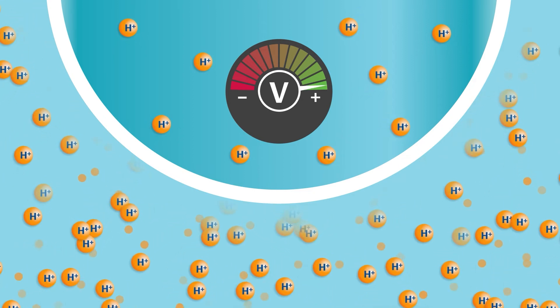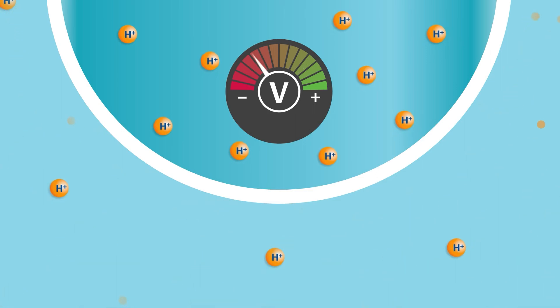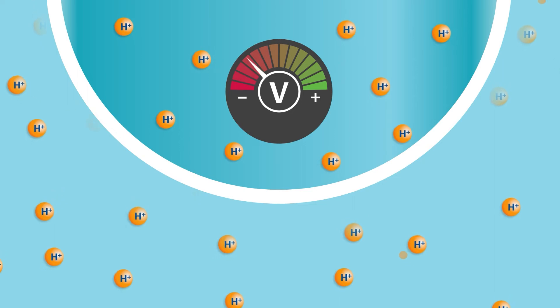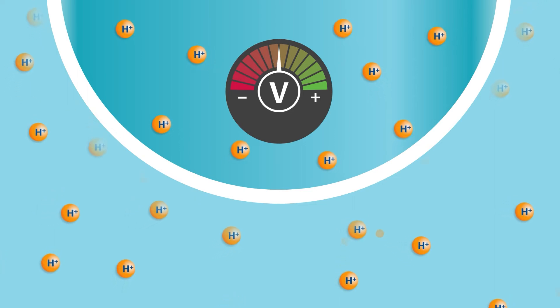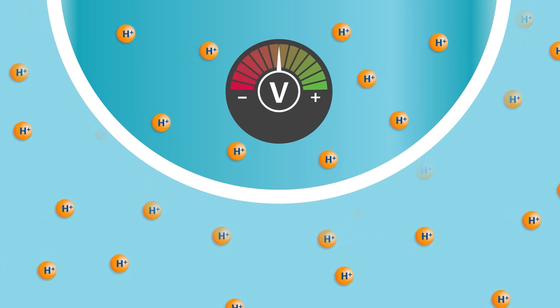If the hydrogen ion concentration is the same on each side of the glass electrode, the voltage is zero indicating the process is at a neutral pH of seven.